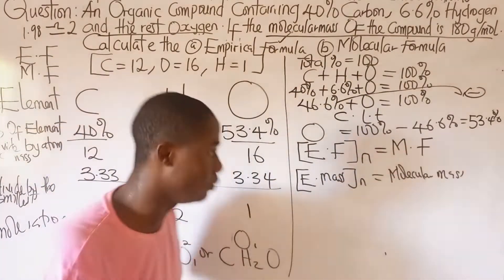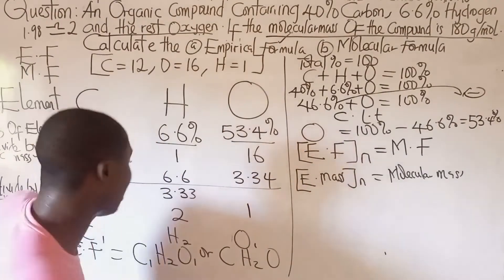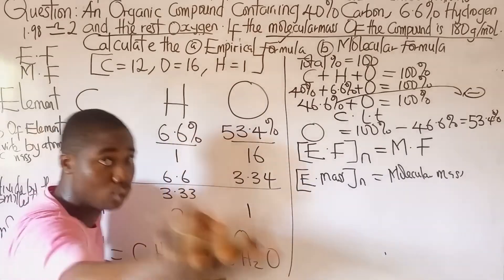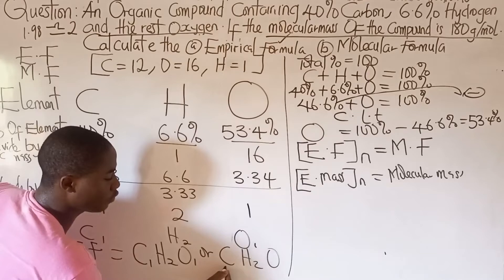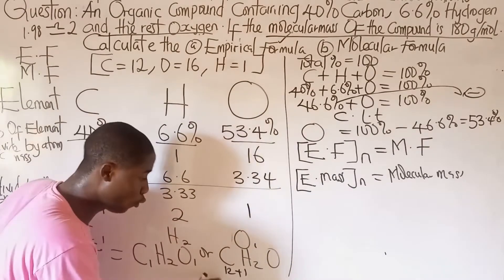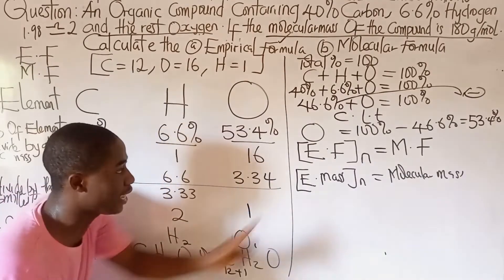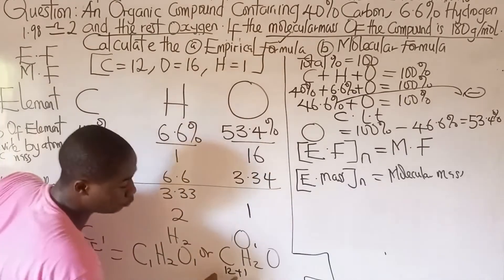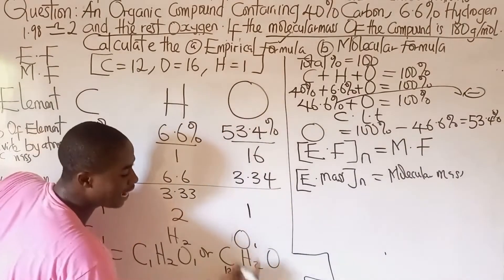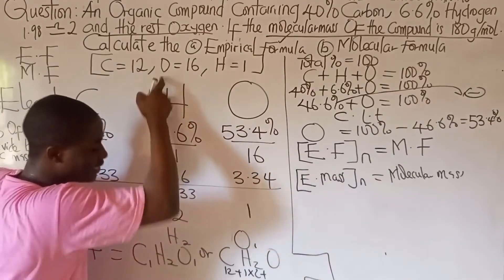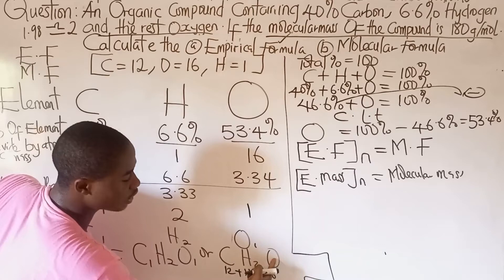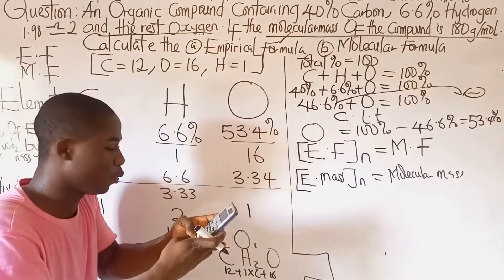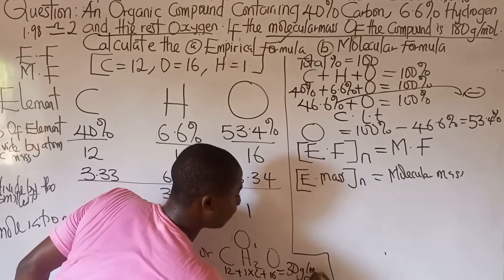The empirical formula we got is CH₂O. To get the empirical mass, we calculate using atomic masses: carbon = 12, plus hydrogen = 1 × 2 = 2, plus oxygen = 16 × 1 = 16. So empirical mass = 12 + 2 + 16 = 30 grams per mole.